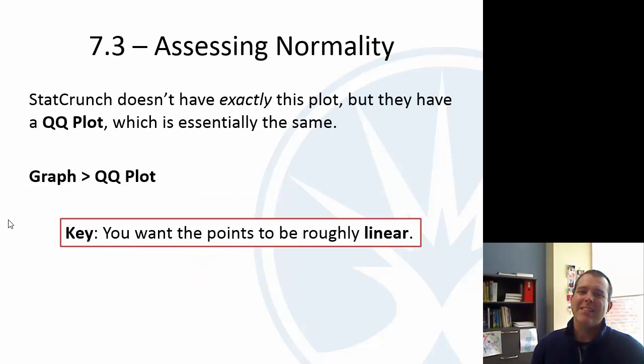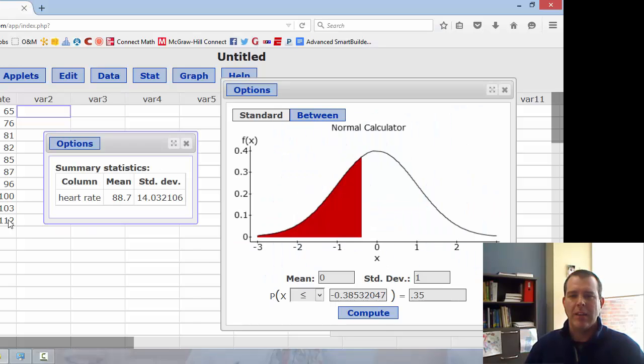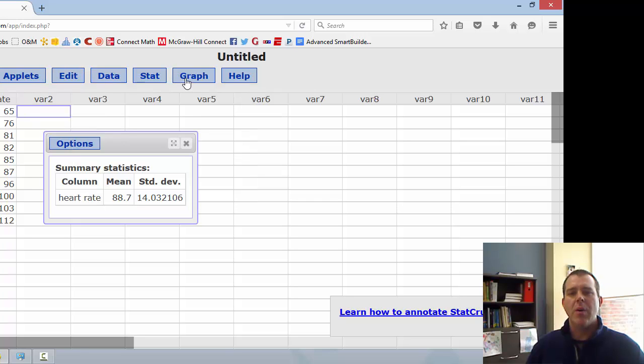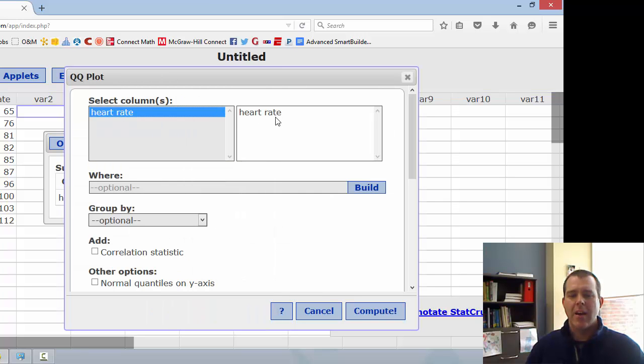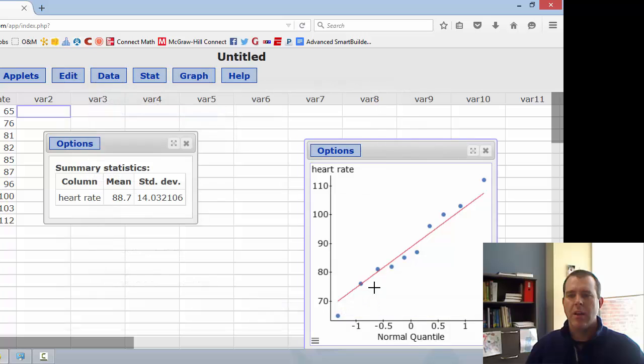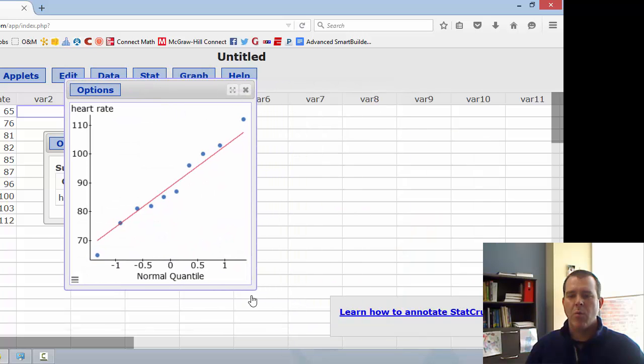We're not going to do any of these calculations by hand. StatCrunch doesn't have exactly this plot. They have a QQ plot - it's a quantiles plot, normal quantiles. If you go under graph, QQ plot is right here. Click on QQ plot, select that heart rate, just click compute, and you can get this graph here.